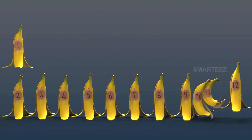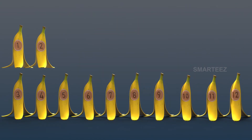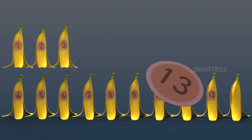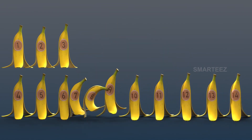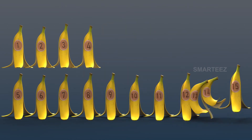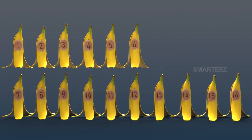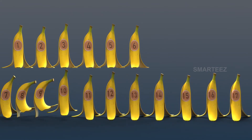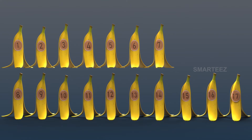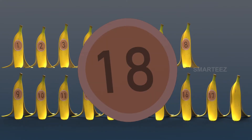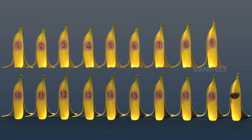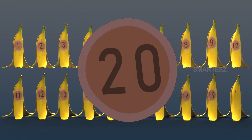When one joins 11, it becomes 12. When one joins 12, it becomes 13. When one joins 13, it becomes 14. When one joins 14, it becomes 15. When one joins 15, it becomes 16. When one joins 16, it becomes 17. When one joins 17, it becomes 18. When one joins 18, it becomes 19. When one joins 19, it becomes 20. Now we have 20. Do you see two rows of 10? Wow! Two rows of 10 make 20. That's good.